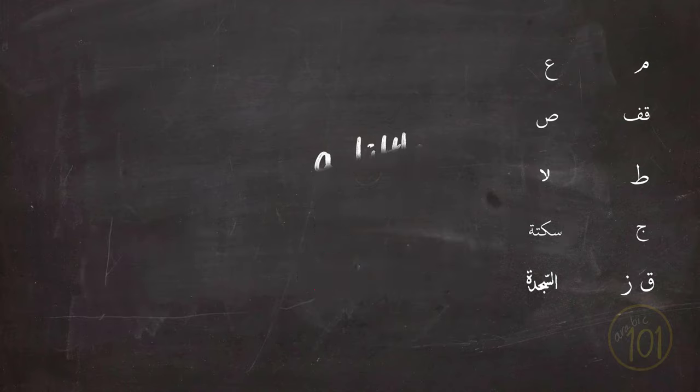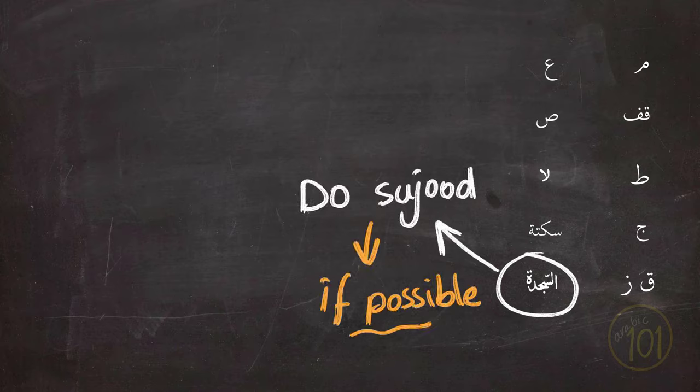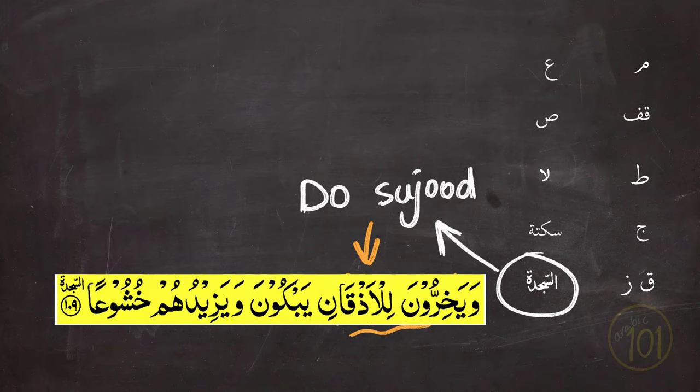Next is the sign that looks like the word As-Sajda, and it means that you will do sujood after finishing this verse. After reading this verse, you are supposed to do sujood for Allah.